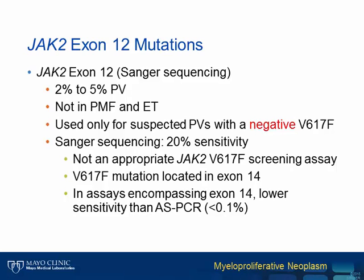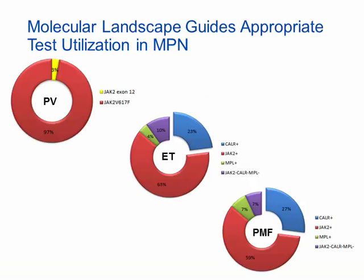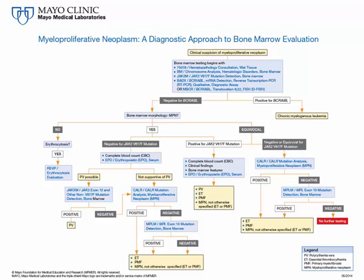Going back to the main molecular landscape of the MPNs, the molecular signature provides diagnostic and prognostic values, especially in PMF. Importantly, the three driver mutations are mutually exclusive of each other with different prevalences. Therefore, we should use this information as a roadmap to guide our test utilization during workup of classical BCR-ABL negative MPN cases. We should test for the most common mutation first, and if negative, then reflex to the next most common one. This is our updated diagnostic algorithm of MPN workup incorporating JAK2, CALR, and MPL molecular testing in a value-driven, cost-effective approach.